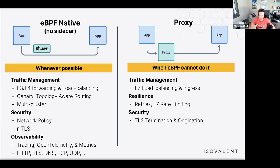Also achievable in eBPF: HTTP or layer 7 observability for protocols HTTP, TLS, DNS, TCP, and UDP. This data can be exported via OpenTelemetry traces and metrics, Prometheus metrics, or JSON tracing data, feeding into existing dashboards or tracing utilities. When you configure layer 7 load balancing — path-based routing, header-based routing, SNI or hostname-based routing, and ingress — a proxy is still used.